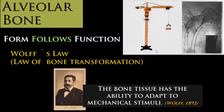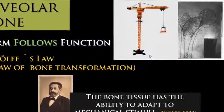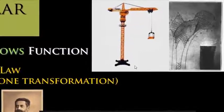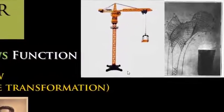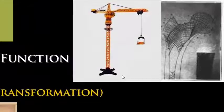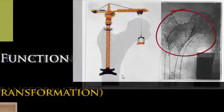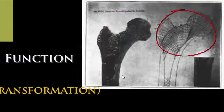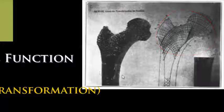The example most studied by Wolff was the femur, which could be compared to a crane, whose internal and external structures would be specific and appropriate to sustain a given mechanical load. The same goes for bones. The trabecular arrangement of the femur, illustrated in Wolff's drawings, represents the best possible configuration for this bone to withstand its mechanical stresses.